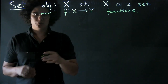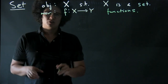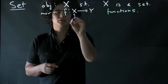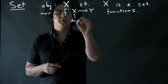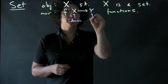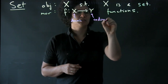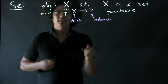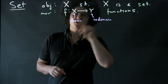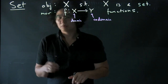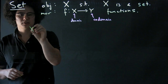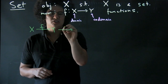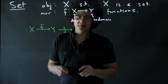Now given a function, I would call this the domain of F and I would call this the codomain of F. Now if we have two functions, say F and G, such that the codomain of F is the domain of G, then we can compose those functions. So we can take F from X to Y and G from Y to Z and we can compose them.